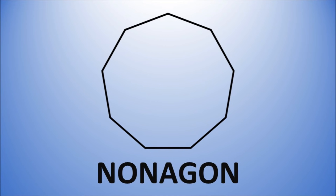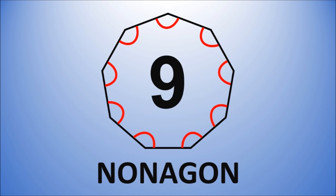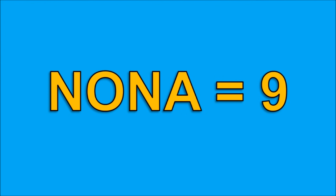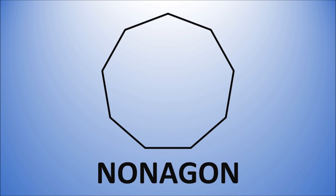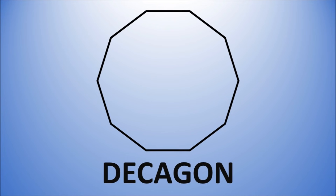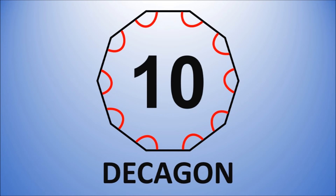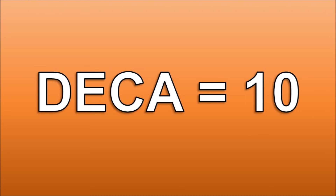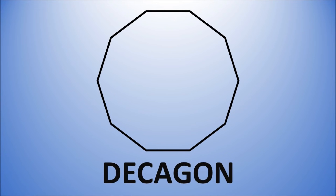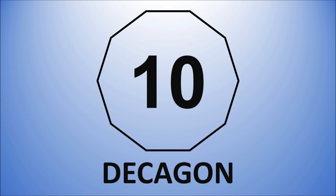A nonagon has nine sides and nine angles made from straight lines. Just remember that nona means nine. A decagon has ten sides and ten angles made from straight lines. The word deca means ten — that's right, a decagon has ten sides.